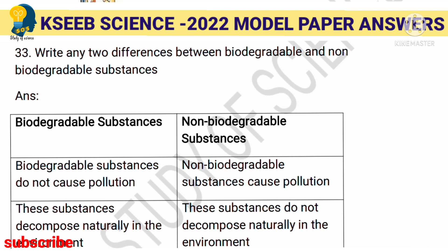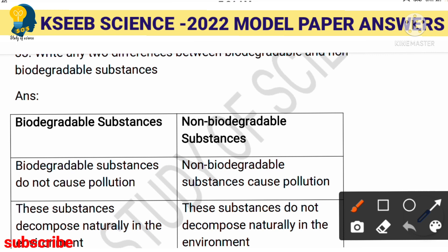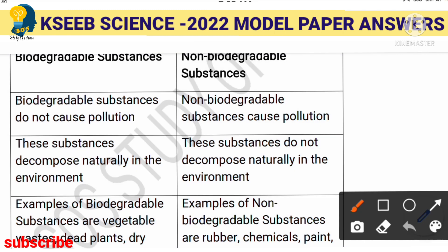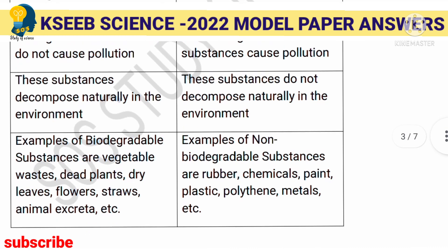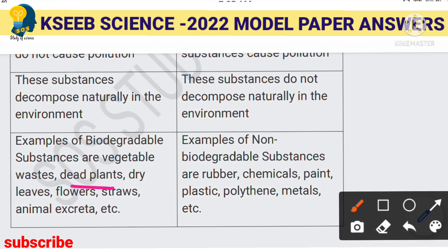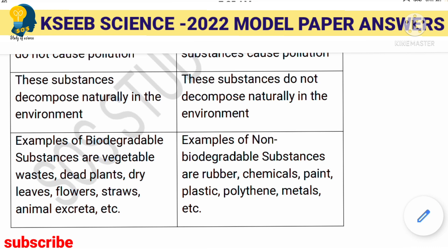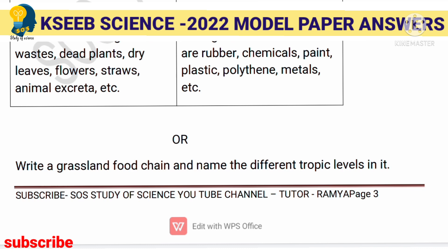Write two differences between biodegradable and non-biodegradable substances. Biodegradable substances degrade easily and mix with soil; non-biodegradable do not mix with soil easily. Biodegradable substances do not cause pollution, whereas non-biodegradable substances cause pollution. Biodegradable substances decompose naturally — examples include dry plants, leaves, flowers, straw, and animal excreta. Non-biodegradable substances like chemicals, paints, plastic, and metals do not decompose naturally.